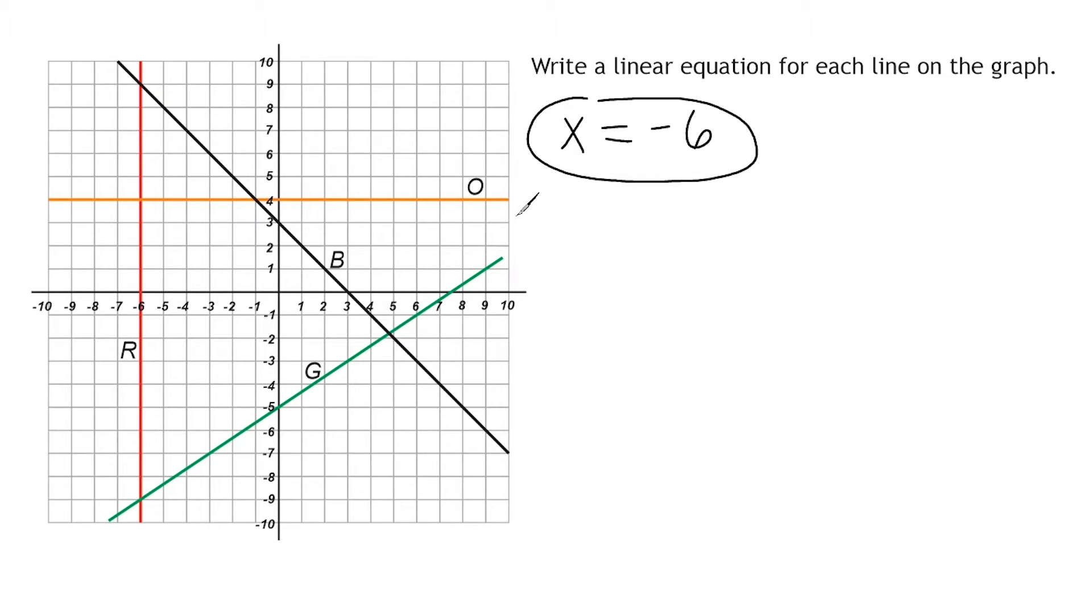All right, now let's take a look at this orange horizontal line. So what you do with any horizontal line is you start by writing the variable y is equal to. And after the equal sign, just write what number the line is crossing through on the y-axis. In this case, it is positive 4. So the equation to represent that orange horizontal line is y equals positive 4.